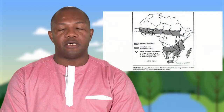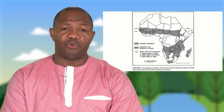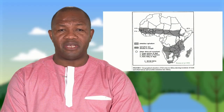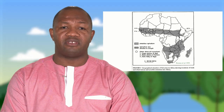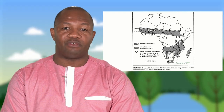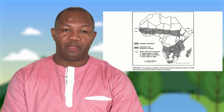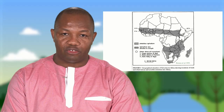Le ZAÏ est une pratique agricole qui intervient — ou qui est intervenue — dans trois pays essentiellement sahéliens d'Afrique de l'Ouest, à savoir le Mali, le Niger et le Burkina Faso.